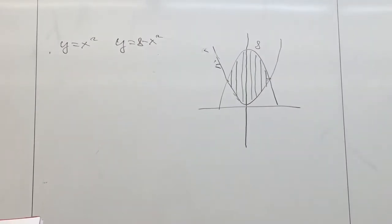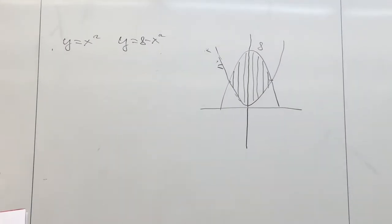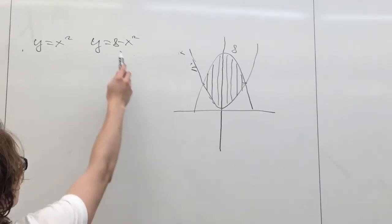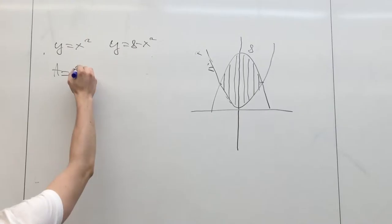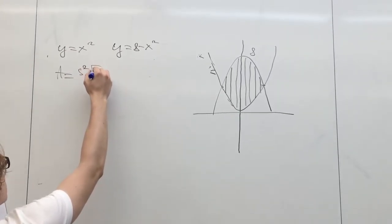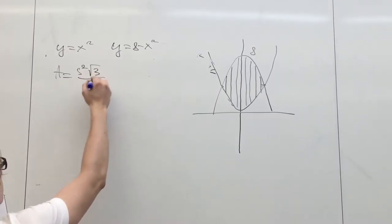We need to find the volume of a solid whose base is the region bounded by the curves 8 minus x squared and x squared, and whose cross-sections are equilateral triangles perpendicular to the x-axis.